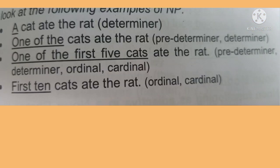Let's look at combined examples. 'A cat ate the rat' — A is an article and the determiner. 'One of the cats ate the rat' — one of is the pre-determiner, the is the determiner. 'One of the first five cats ate the rat' — one of is pre-determiner, the is determiner, first is ordinal, five is cardinal. 'First ten cats ate the rat' — first is ordinal numeral and ten is cardinal numeral. It is also important to remember that numerals are also adjectives.